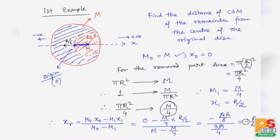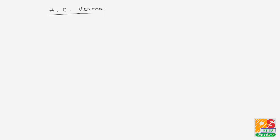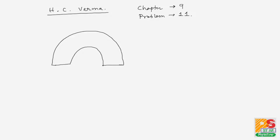Now coming to our next example. It is a very famous problem from the book HC Verma, Chapter 9, Problem Number 11. An annular disk is given with inner radius r1 and outer radius r2.